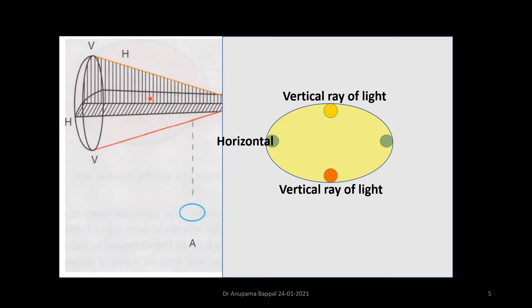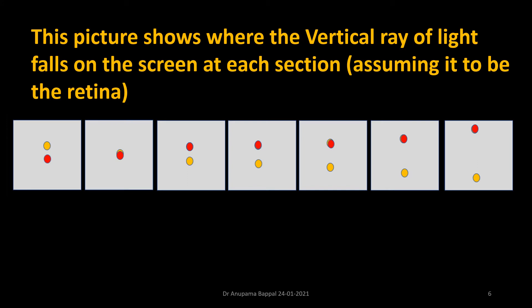So let's make it very simple. Why is that we get different images at different sections? I have depicted the vertical ray of light as yellow and red here on a surface and the horizontal ray of light as blue. So let's see how a vertical ray of light would fall on the screen at each section. This picture shows that this is a vertical ray of light.